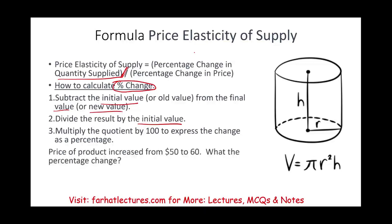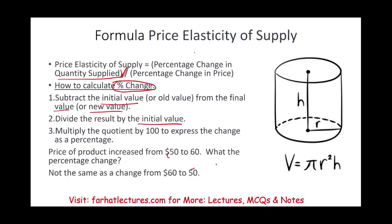For example, if the price of a product increases from $50 to $60, the dollar change is $10, divided by the initial value of $50, giving a 20% change. Be aware it's not the same as going from $60 to $50 — there the change is $10 divided by $60, which equals 16.67%. So be careful and use a calculator.